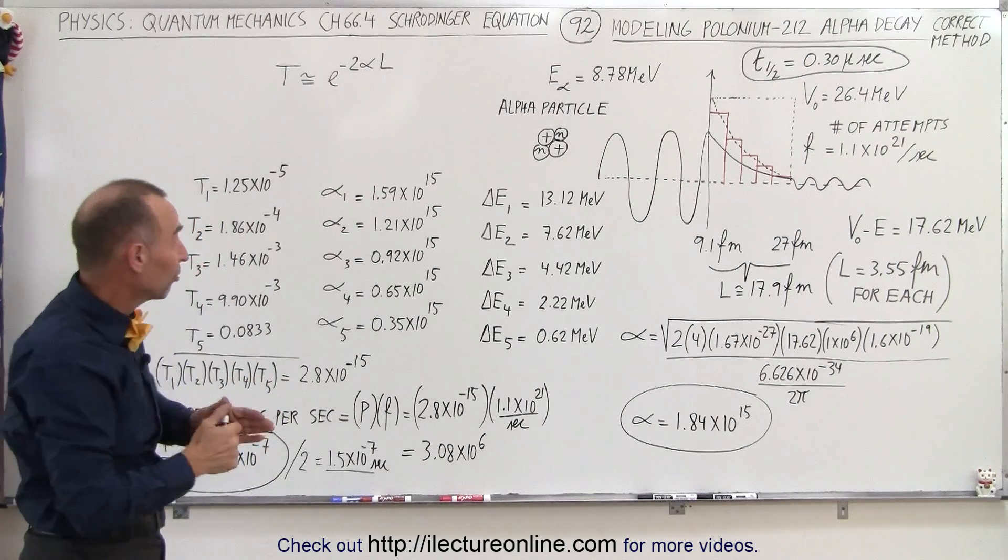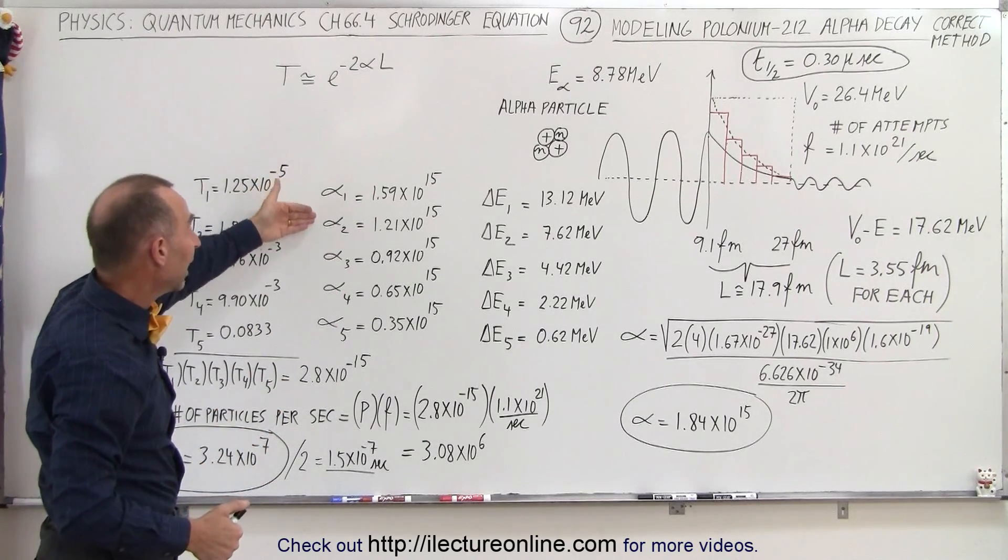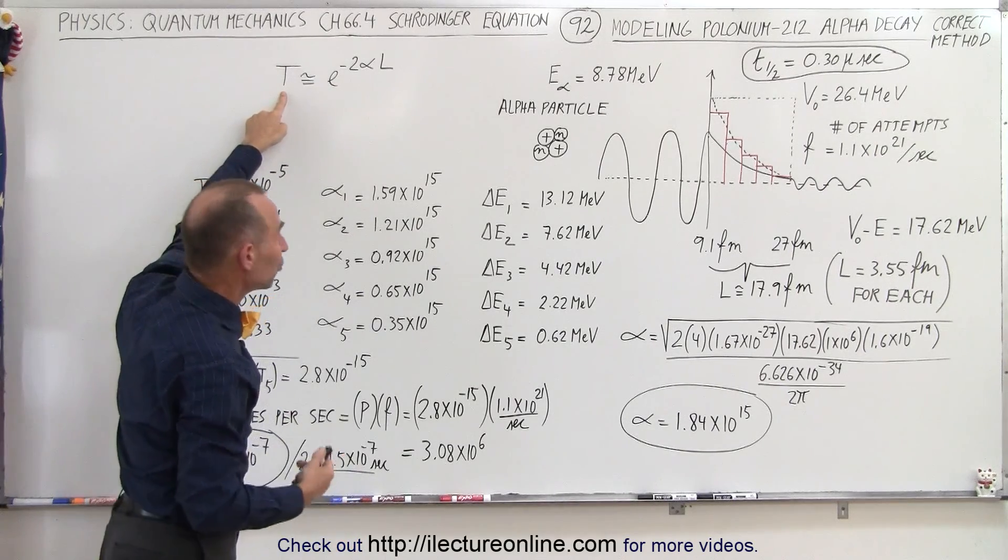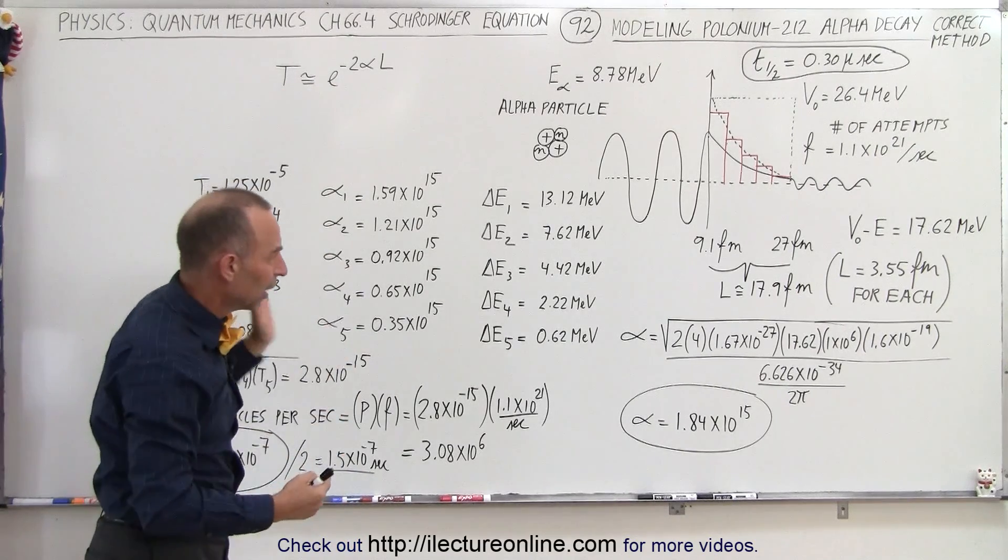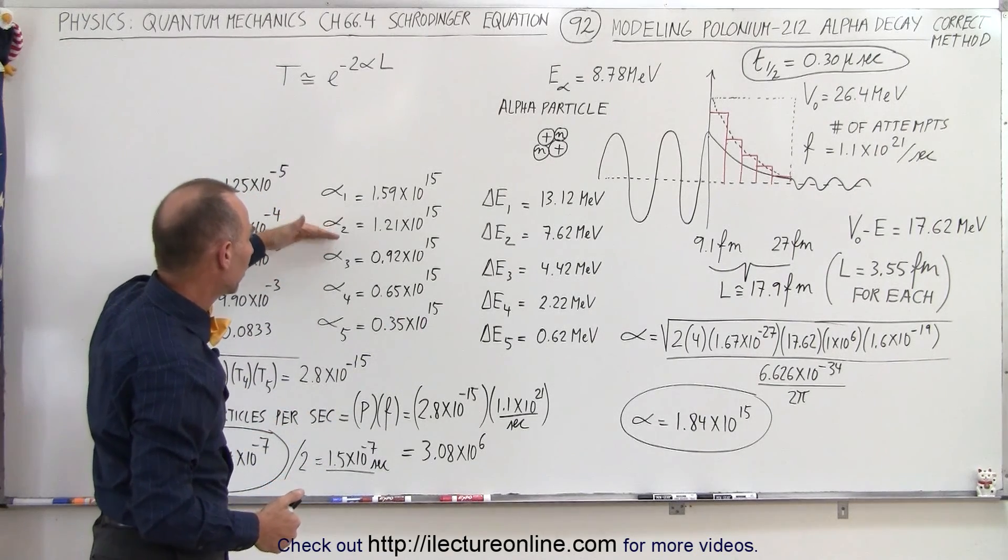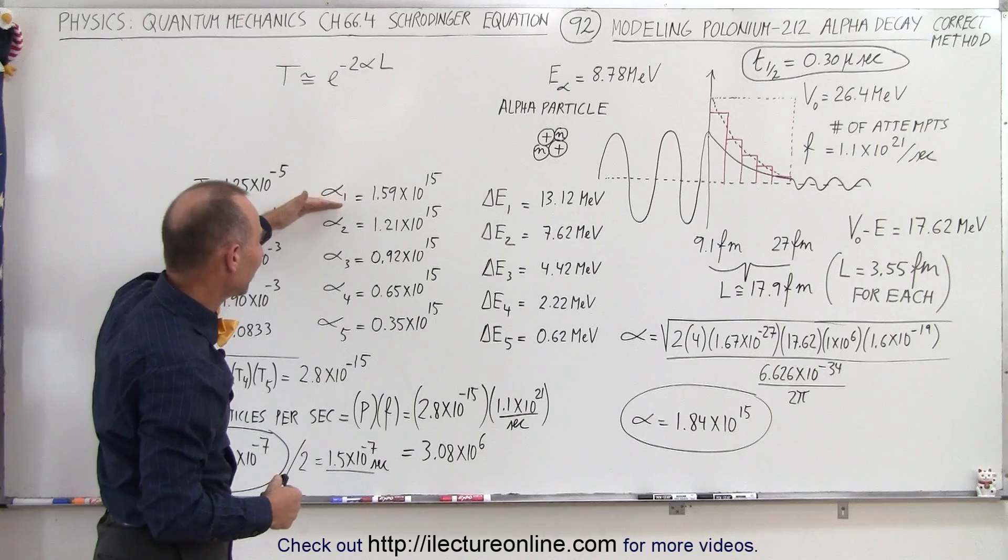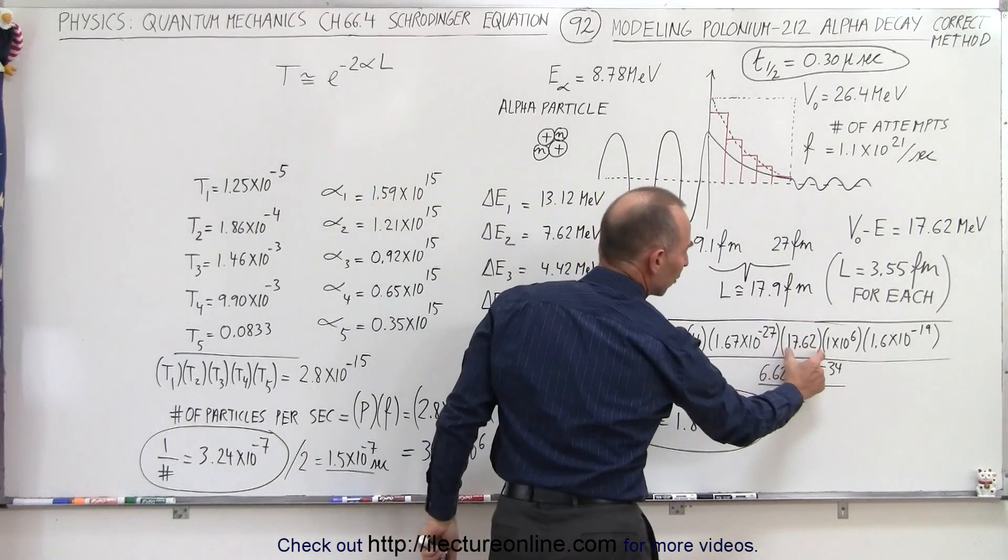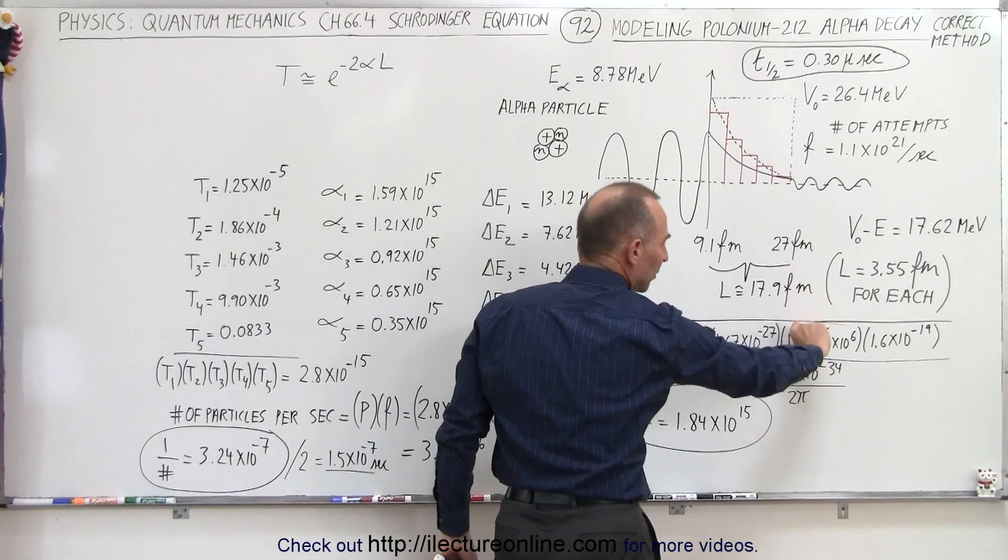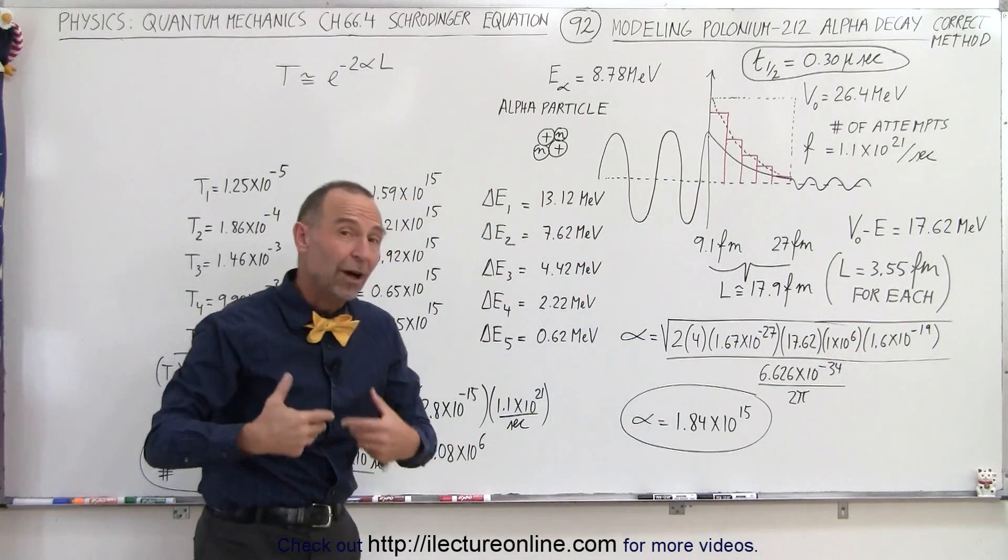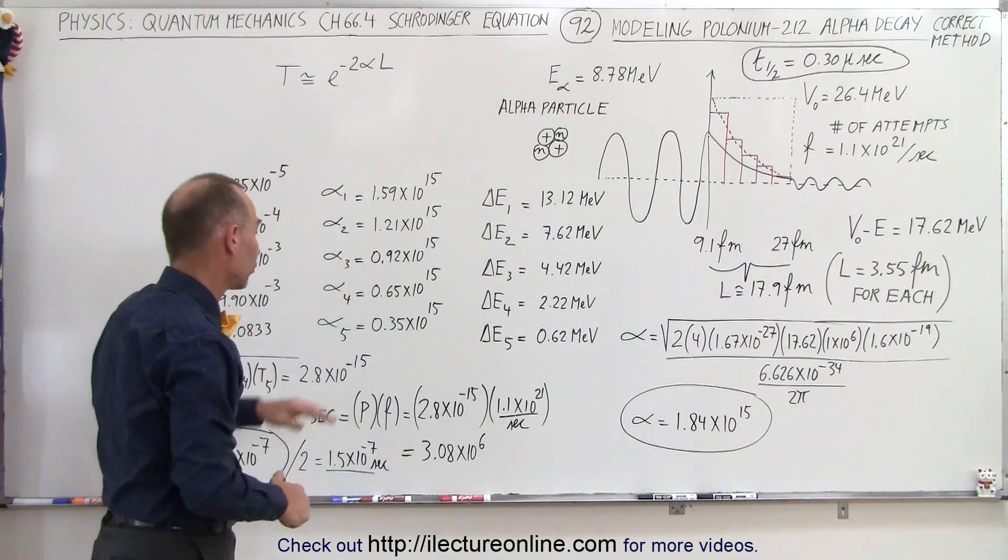So for each of those energy differences we calculated the alphas that goes into our equation here to calculate the transmission coefficient or the probability of the particle breaking through. So you can see that the alpha value gets smaller and smaller as the difference in the energy between the particle and the barrier becomes smaller, we get a smaller alpha. Small alpha means a higher probability of breaking through.